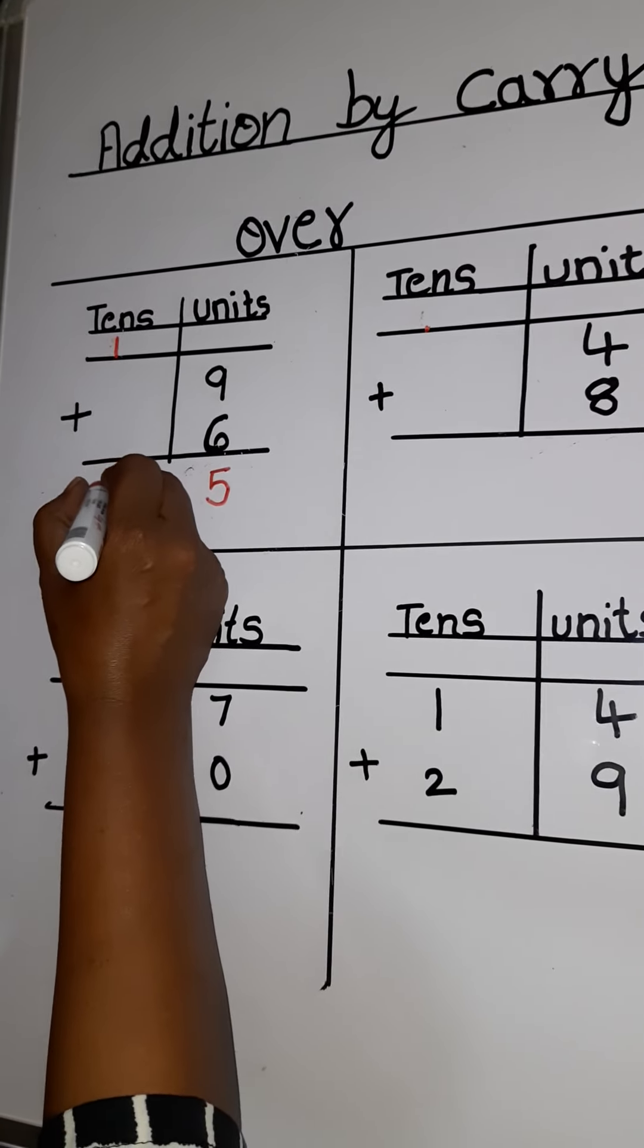So 7 plus 0 equals to 7. And 7 is a single number. Okay. Now we go to the 10's place. You can see numbers under 10's place also.